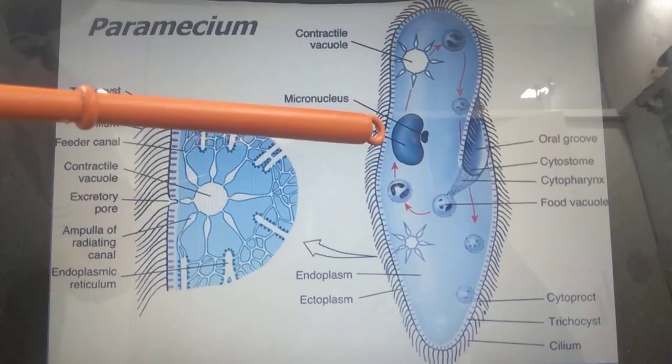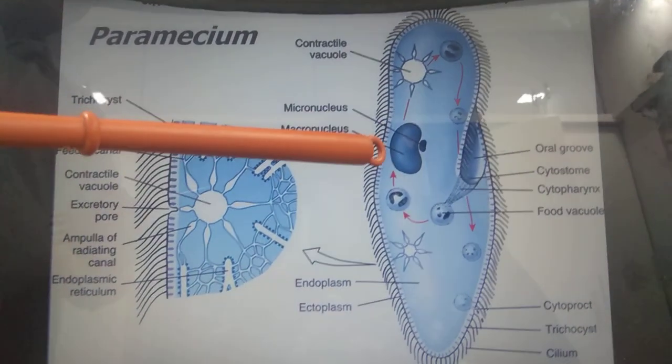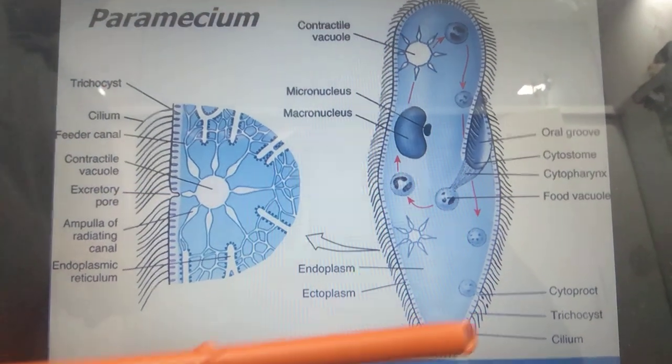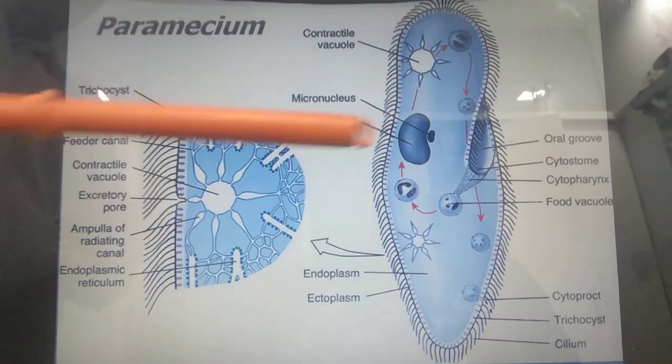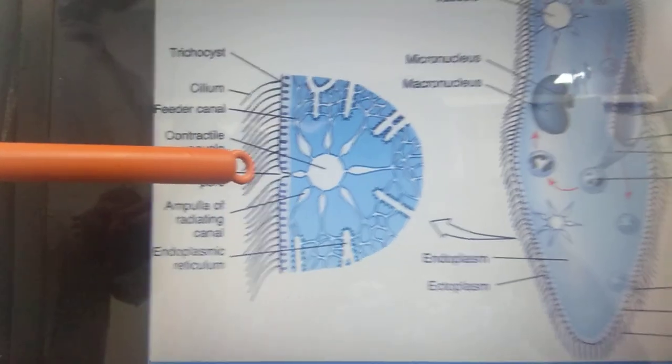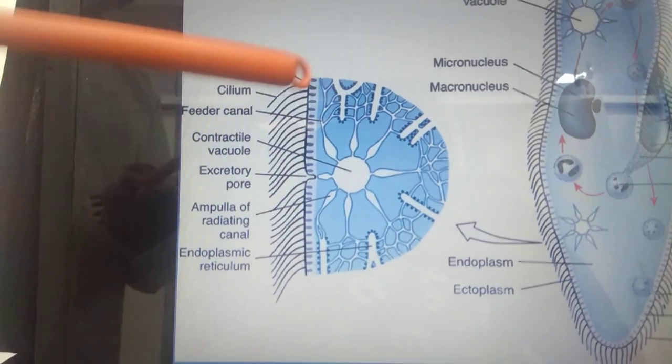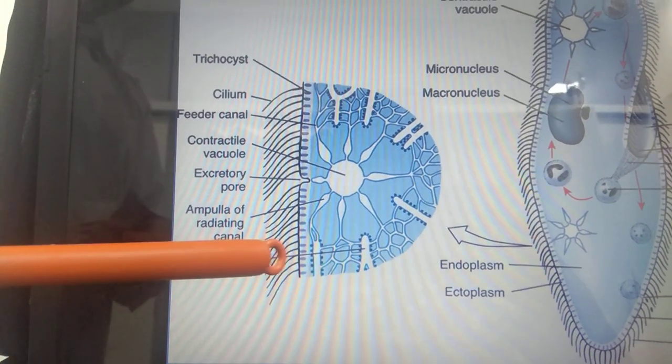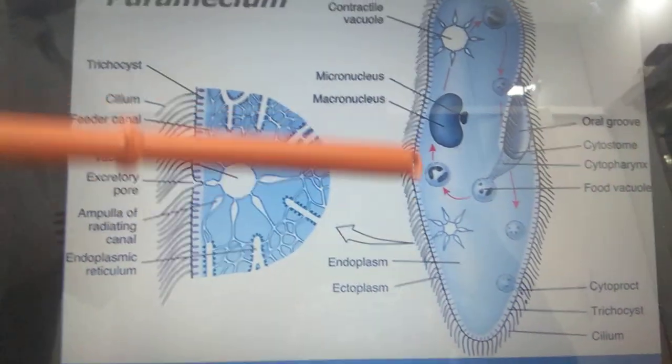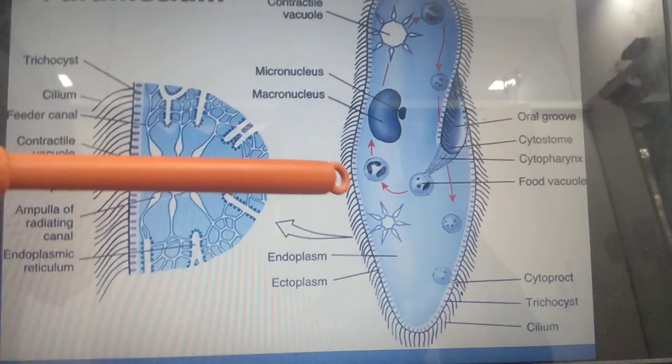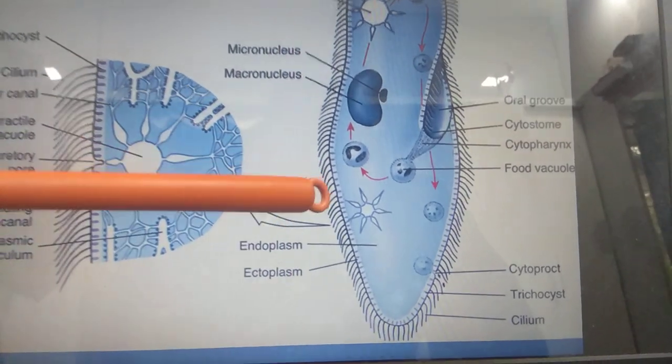The ectoplasm is covered by the pellicle, which shows numerous hair-like fine structures called cilia. The cilia are thread-like structures used for locomotion. Besides the cilia, the pellicle has another structure called trichocyst.